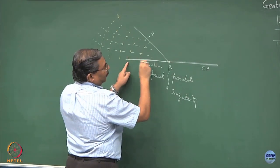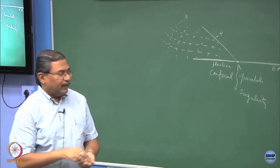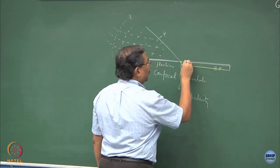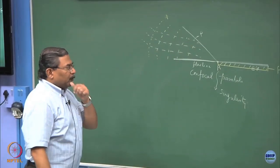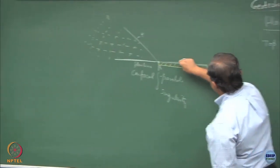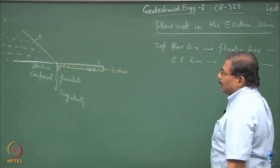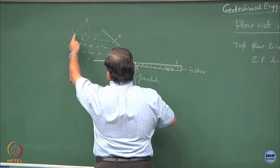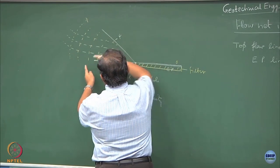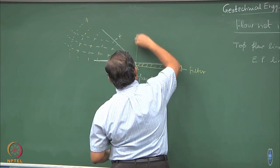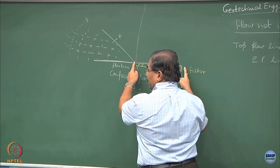On the left hand side I have the flow line, on the right hand side I have the equipotential line, and hence point A becomes singular. This type of situation can be created by putting a filter layer. The moment you put a filter layer, this becomes an equipotential — the atmospheric pressure prevails and the total head is going to be 0 at this point. All the equipotential lines, when plotted in totality, would extend up to this regime, and this line would become the bottom most equipotential line.